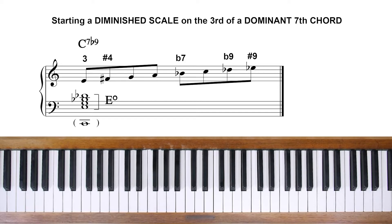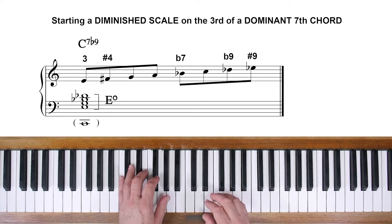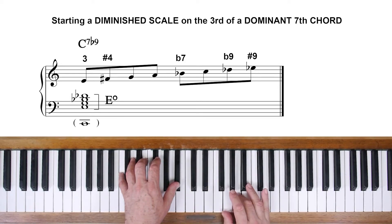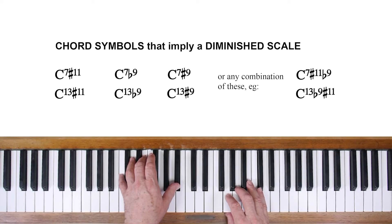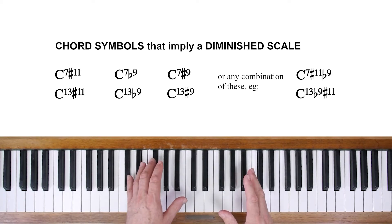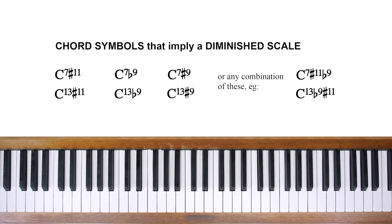Please note, the scale contains a regular fifth and sixth. Therefore, it'll work well with 13th chords as well, as long as you don't have the regular ninth in the chord. Look out for chord symbols like C13 sharp 11, C13 flat nine, C7 sharp nine or C7 flat nine, or any combination of these such as C13 sharp 11 flat nine. Those chord symbols are more or less telling you that the diminished scale is a good choice.